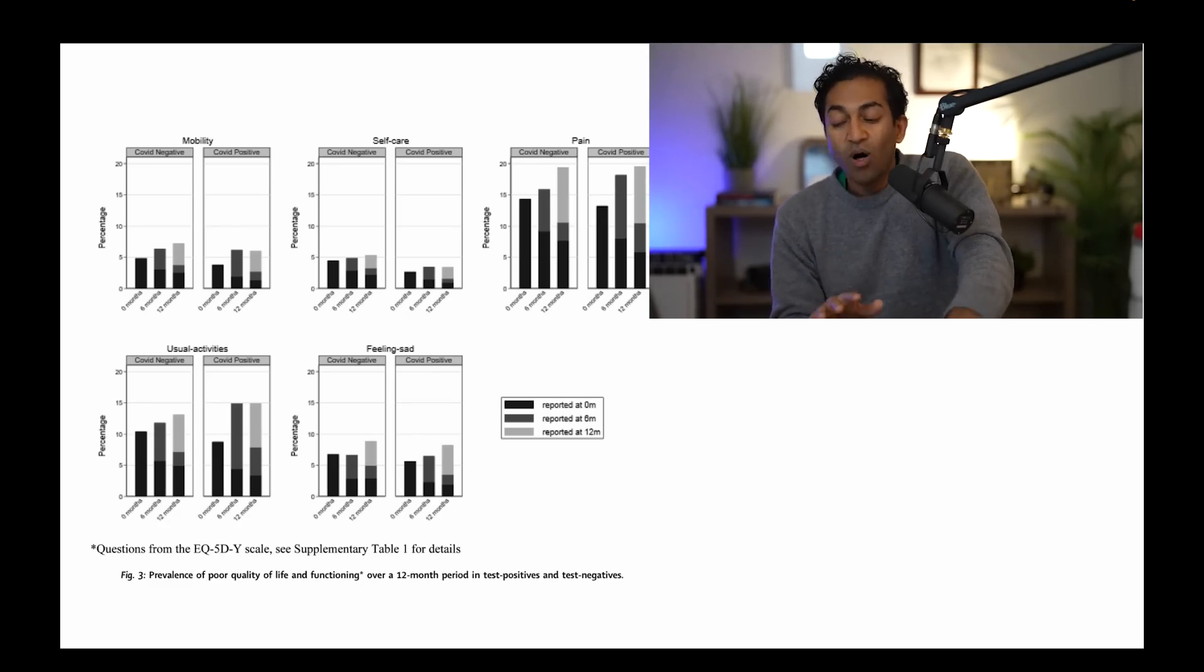This looks at quality of life and functioning. And what it shows you is these are people in whom quality of life and functioning are considered poor quality. And on mobility, self-care, pain, usual activities, feeling sad, it looks like a wash.